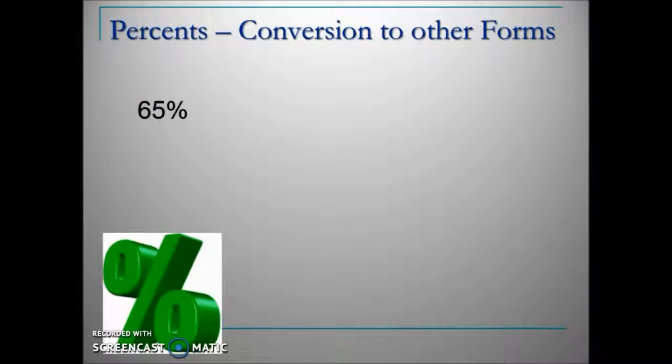When we're converting from a percent, we can translate that 65% here as a fraction, 65 over 100, and if we read that, sixty-five hundredths, it lends itself to the decimal equivalency of .65, sixty-five hundredths.